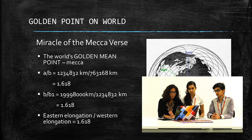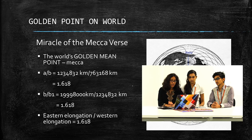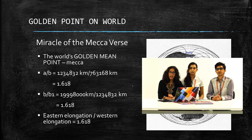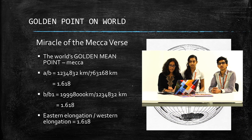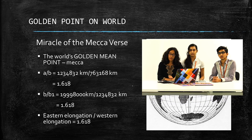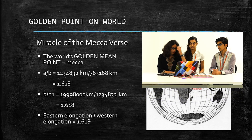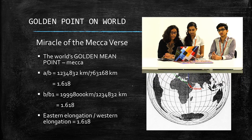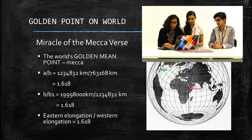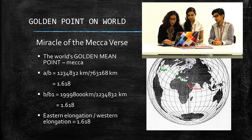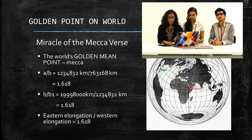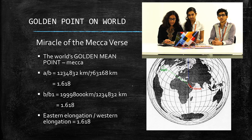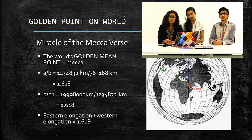There is a golden point on the world. If we look at the map, the distance from the city Mecca to the north pole and the distance from Mecca to the south pole is in golden ratio. We have tried to calculate the golden ratio by calculating these distances, and the distance from Mecca city to both ends of the diagonals is also in golden ratio.